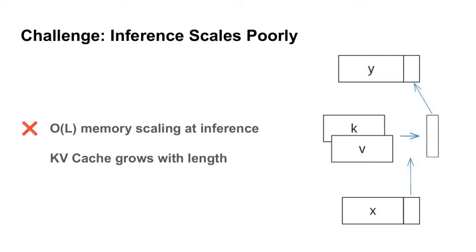Transformer inference scales poorly, and in particular it scales poorly in memory. The particular problem is that the KV cache, which is the values that the transformer needs to store, scales linearly with the number of tokens you've generated.